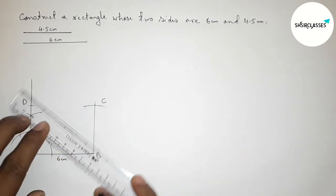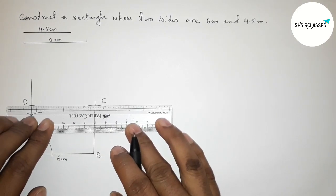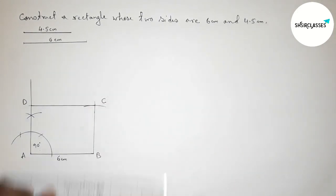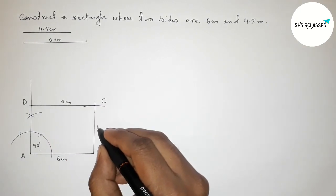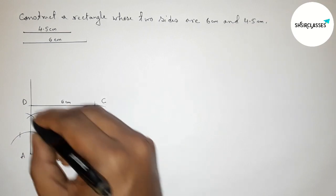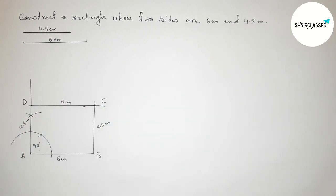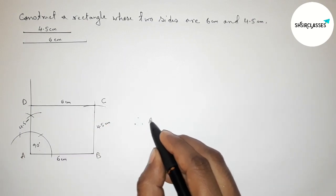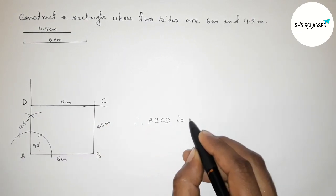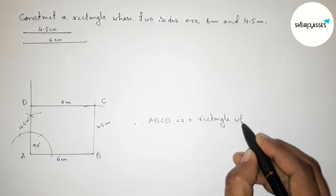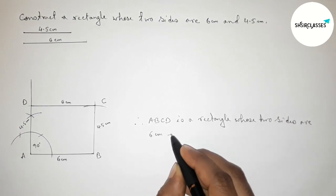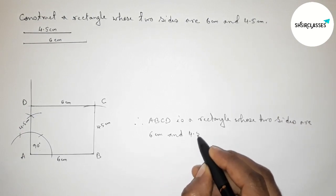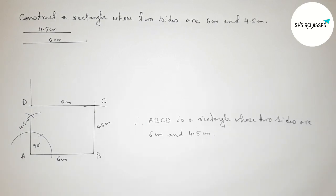Next, joining first line BC, then joining line CD to get a rectangle. This side and this side are equal — this is 6 centimeter, this one 4.5, and this one also 4.5 centimeter. Therefore ABCD is a rectangle with two sides 6 centimeter and 4.5 centimeter. That's all, thanks for watching. If this video is helpful to you, please like and subscribe.